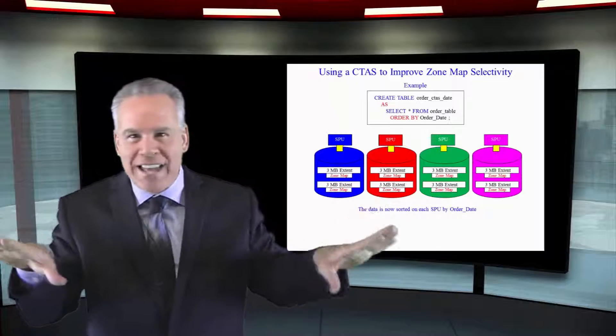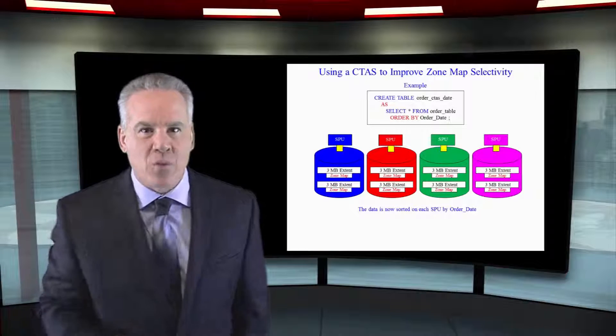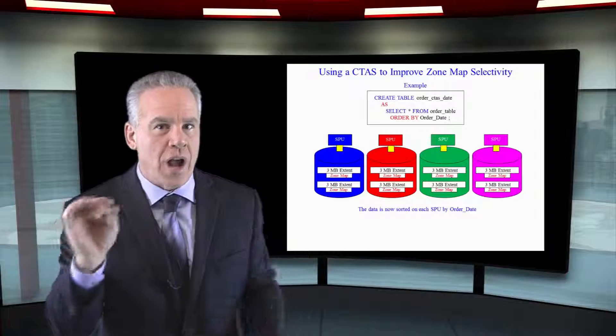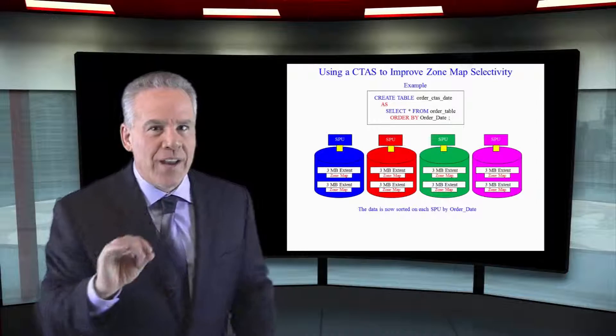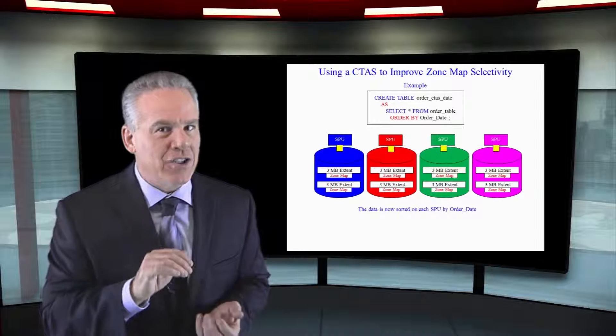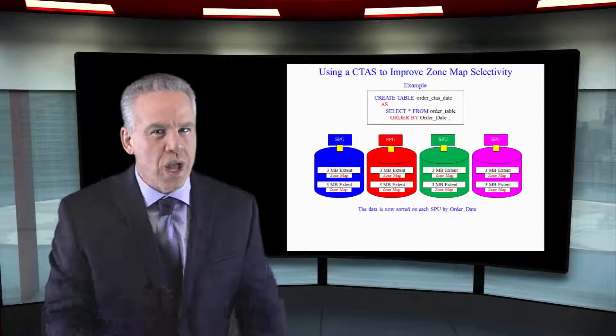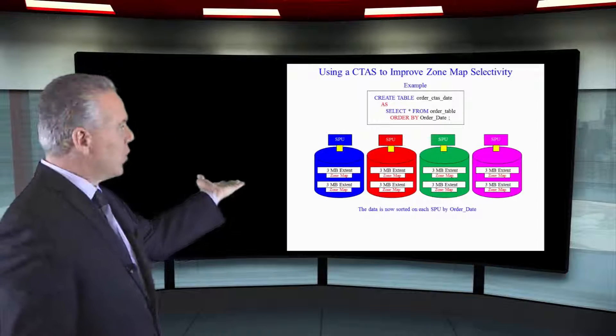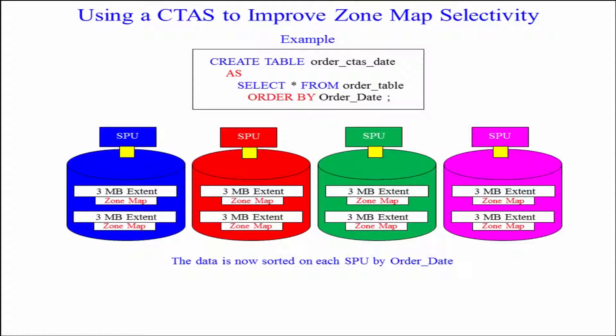It loads that data. But then, afterwards, you might have queries where if the data was ordered on each extent better, the min-max value for each column in an extent would be better ordered. So here, as you can see, we're going to create another table. It's Create Table As this other table, but now I want you to order this in a different way.